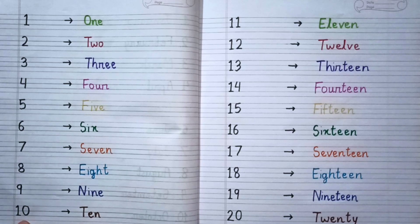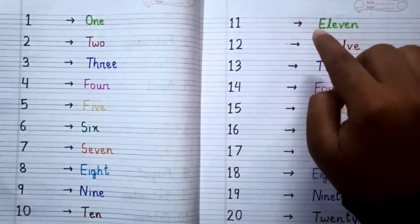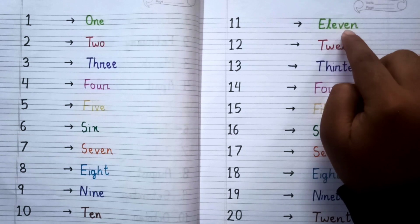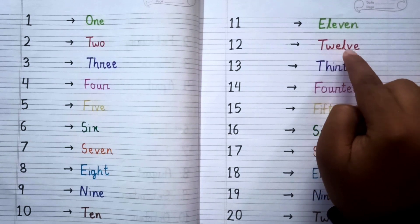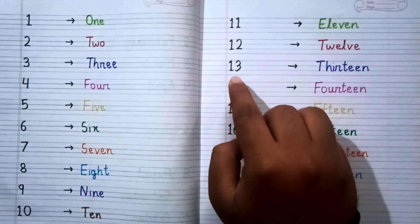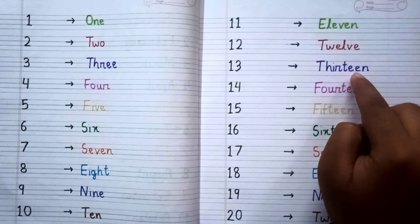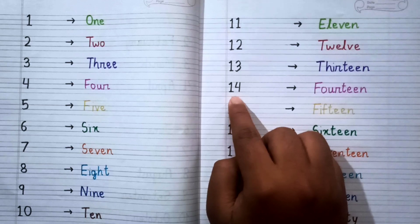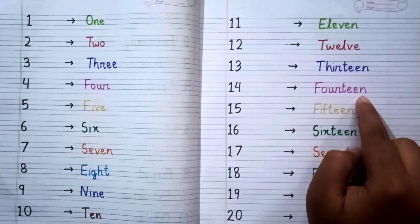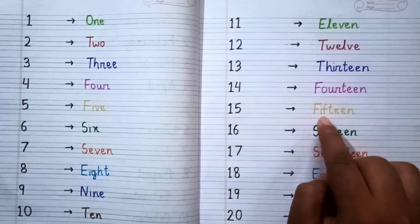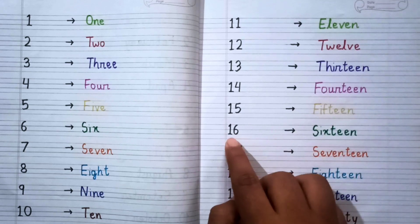9 nine, 10 ten, 11 eleven, 12 twelve, 13 thirteen, 14 fourteen, 15 fifteen.